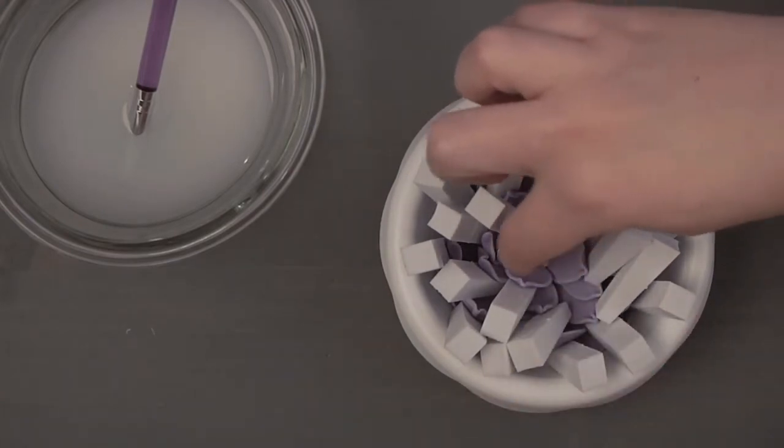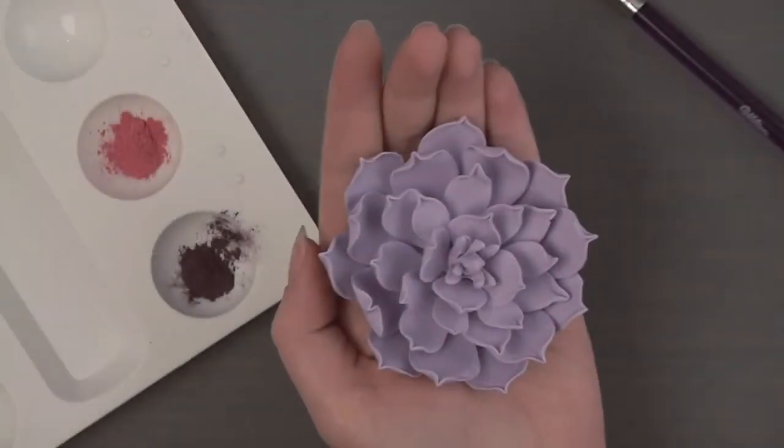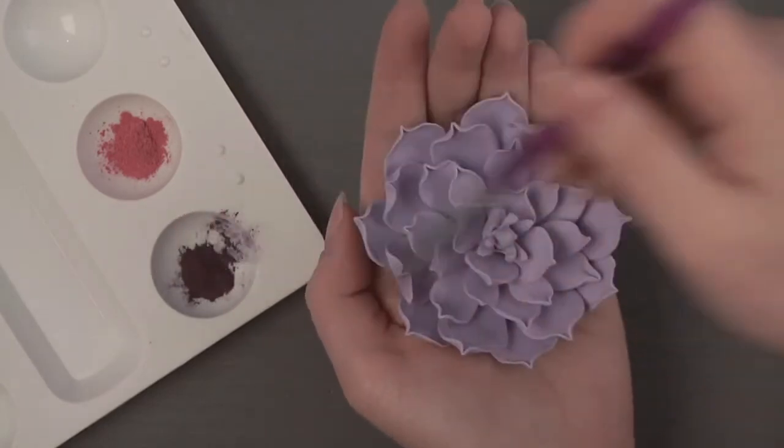Let everything dry overnight in the flower shaping cup. Once your succulent is completely dry, brush the leaves with color dust accents for a more realistic look.